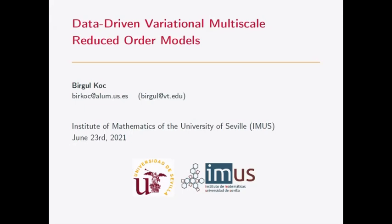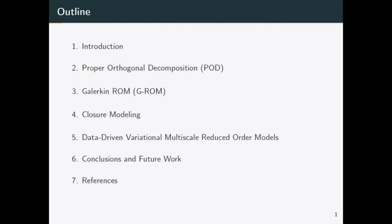In that work we investigate how to increase the numerical accuracy of the current reduced order model. Please, during the presentation, if you have any questions you can interrupt me. Here is my outline: I will give a brief introduction to reduced order models, explain proper orthogonal decomposition, then Galerkin ROM, closure modeling, and finally the main part: data-driven variational multiscale reduced order model. At the end I will summarize and discuss future work.